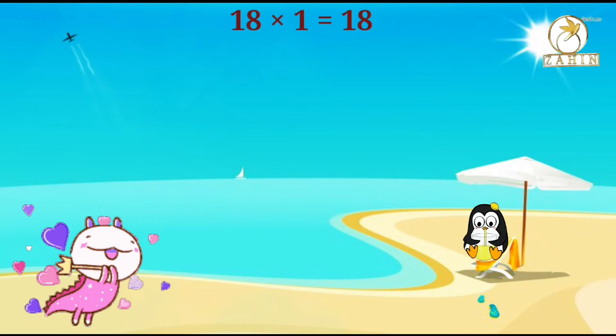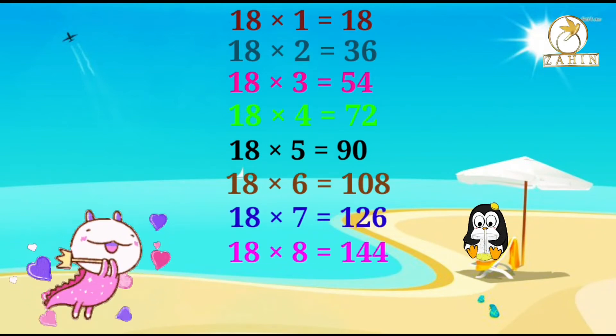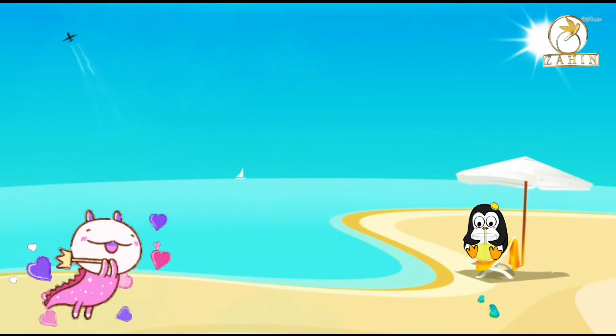18 times 1 equals 18, 18 times 2 equals 36, 18 times 3 equals 54, 18 times 4 equals 72, 18 times 5 equals 90, 18 times 6 equals 108, 18 times 7 equals 126, 18 times 8 equals 144, 18 times 9 equals 162, 18 times 10 equals 180. 19 times 1 equals 19.